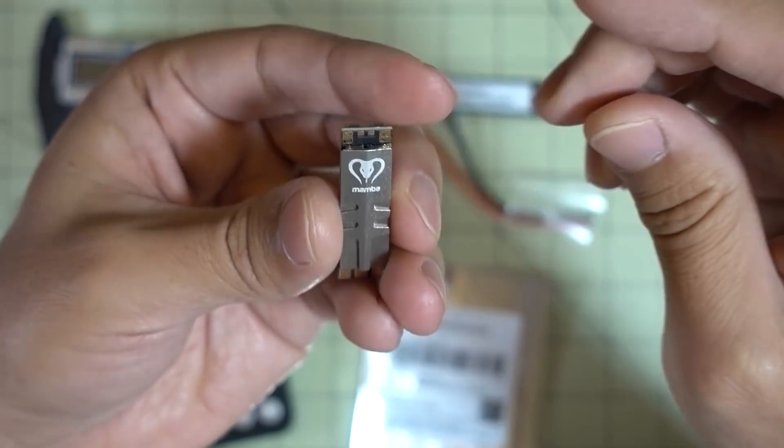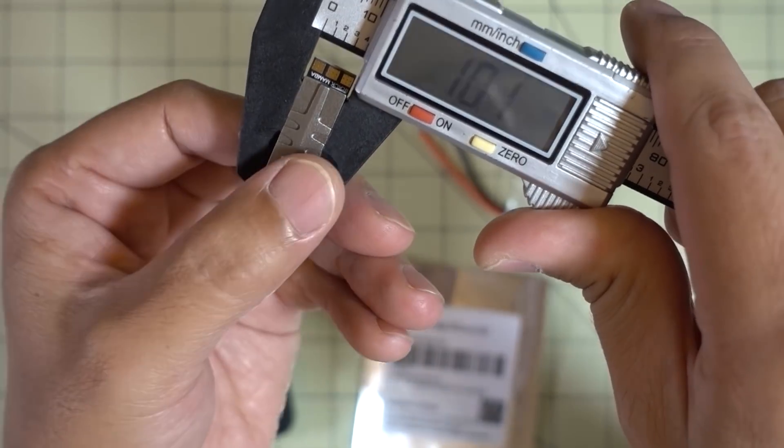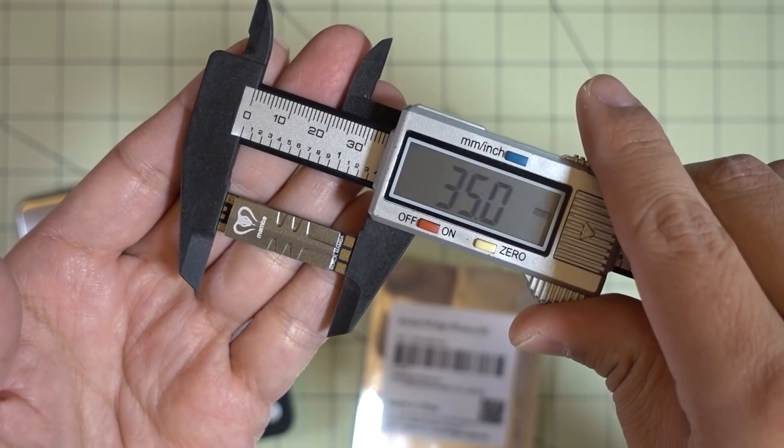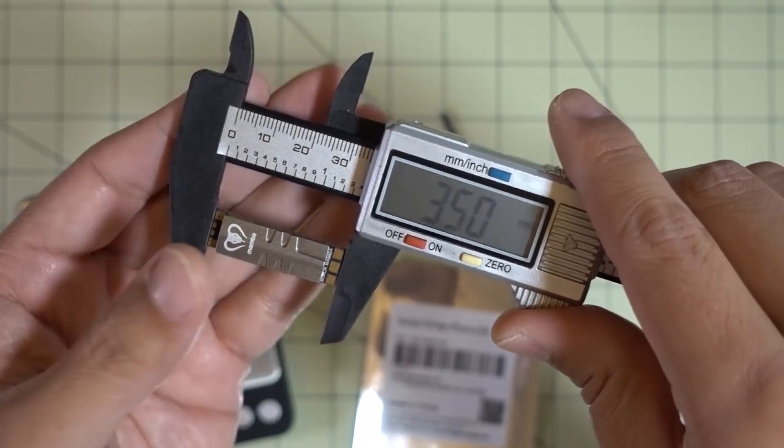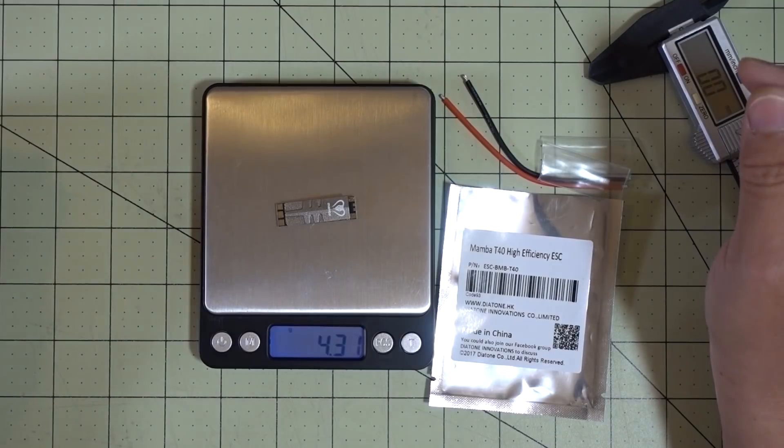Let me just give you some measurements. So it comes in at just over 10 millimeters in width, 35 millimeters long, and about 6 millimeters at its thickest point. The weight just by itself with nothing else is 4.27 grams.